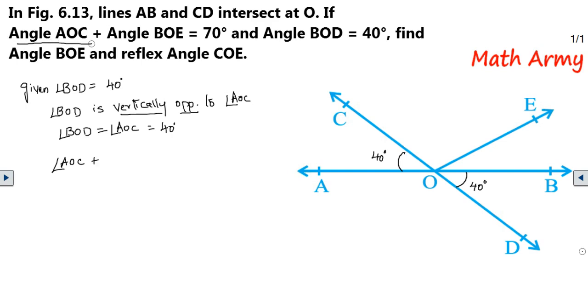Angle AOC and angle BOE. It has been given as 70. But now we know that angle AOC is 40 degrees. If it is 40 degrees and we need to find just BOE. Now let us do one thing. Send this 40 to the right-hand side. It will become minus 40. So therefore, angle BOE is equal to 70 minus 40 degrees which is 30.